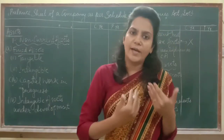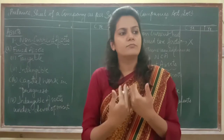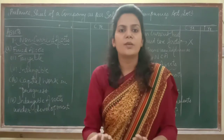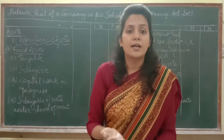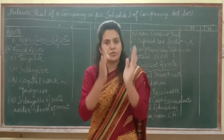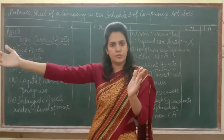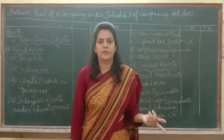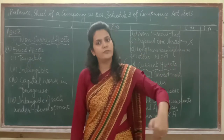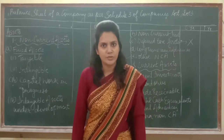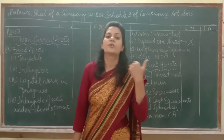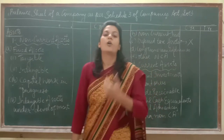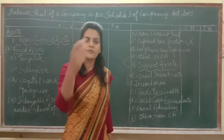Under non-current assets, the first head is fixed assets. Fixed assets include tangible assets — meaning land, building, plant, machinery, furniture, AC — things you can see and touch. Next are intangible assets: goodwill, patents, copyrights, trademarks, franchises, licenses, mining rights, and computer software all come under intangible assets.